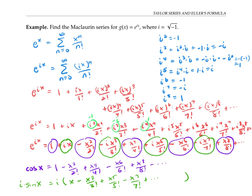This gives us the amazing formula that e to the ix is equal to cosine of x plus i times sine x. This is known as Euler's formula.